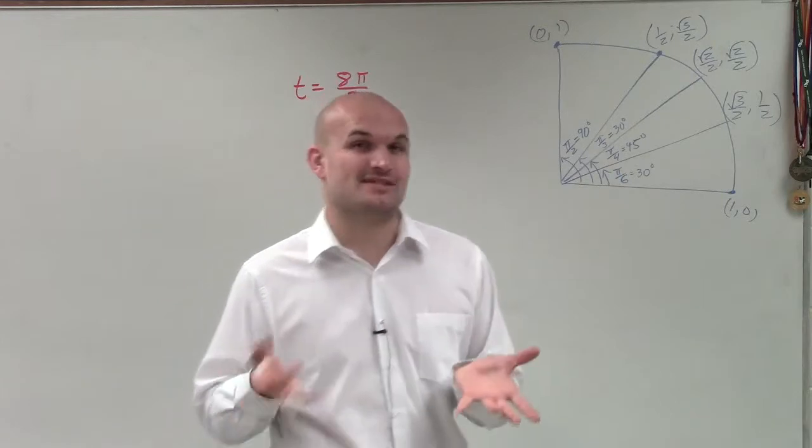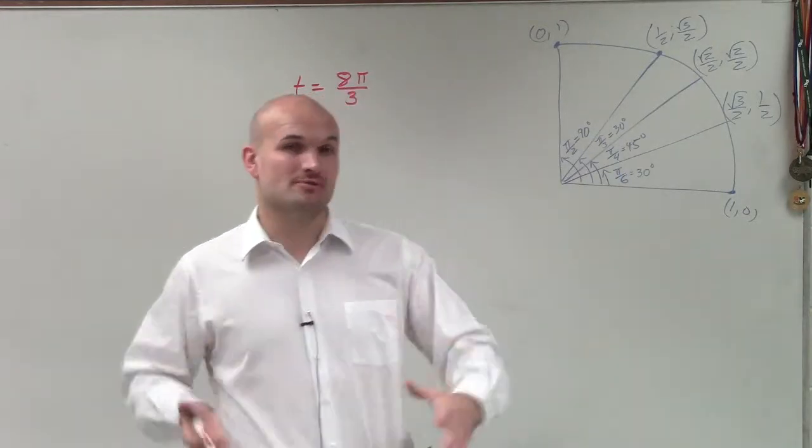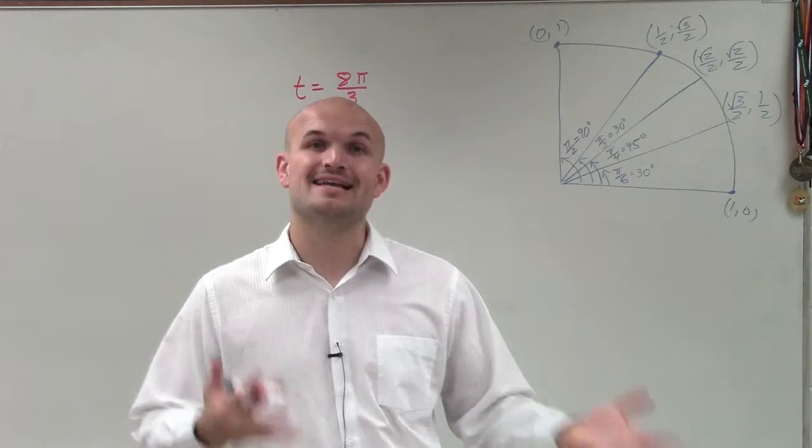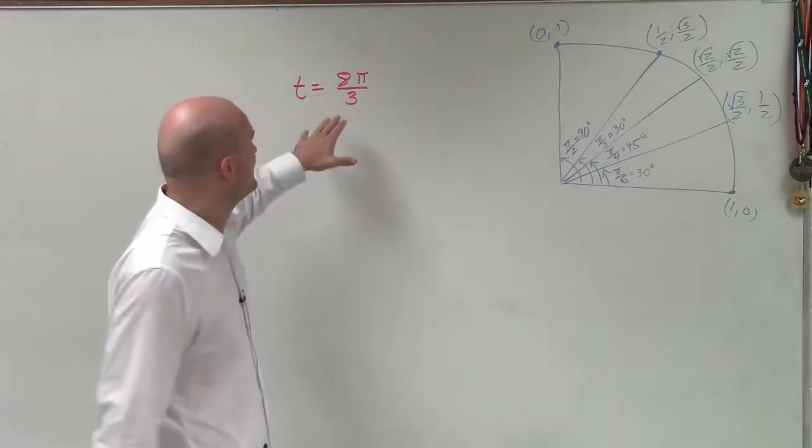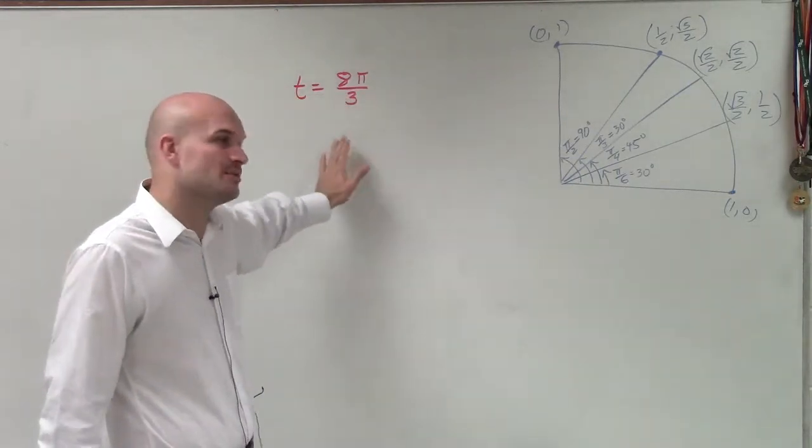So whenever I have an angle that's greater than one revolution of a circle, I'm going to use coterminal angles, or sometimes we call it period designate, to find the smallest coterminal angle that has the exact same initial and terminal sides.